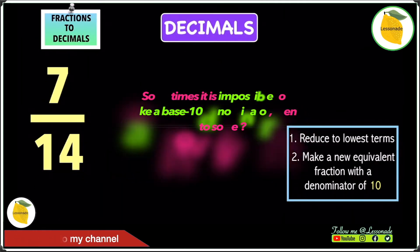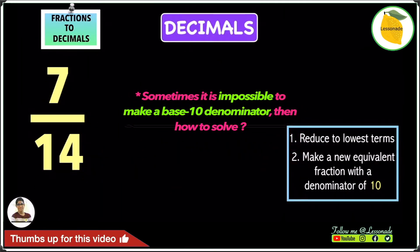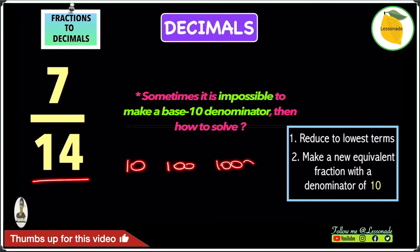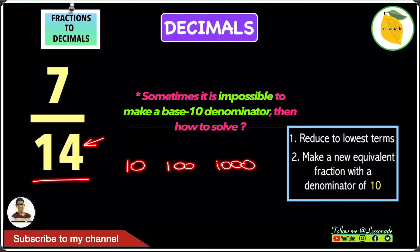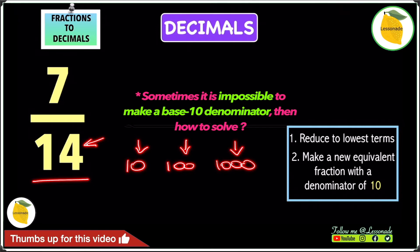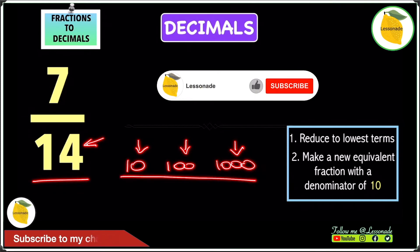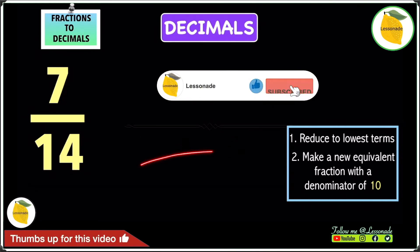Now when we are converting fractions into decimals it's not always obvious that we can change the denominator into 10, 100 or 1000. In this case we have a denominator of 14, and it looks like we cannot change the 14 into 10, 100 or 1000. To convert these fractions into decimals and get a denominator of 10, 100 or 1000, we have to do these two steps.